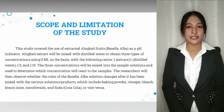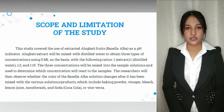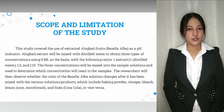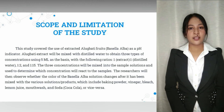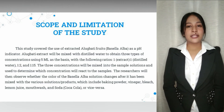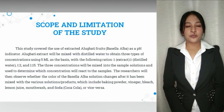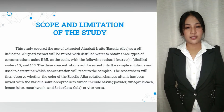The study covers the use of alugbati fruit extract as an alternative pH indicator. The extracted fruit of alugbati will be mixed with distilled water to obtain three types of concentrations using 5 milliliters as the basis. The ratios are 1:1, 1:2, and 1:15. Furthermore, it focuses on the extracted alugbati fruit and its precision in evaluating the fruit extract in titration. Since it targets the fruit of alugbati, no plants nor other parts of the plants will be used in this study.